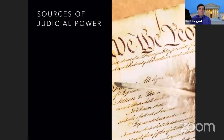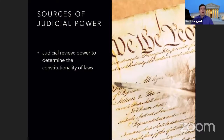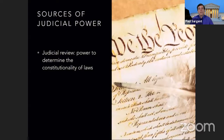The power of the judicial branch comes from a few places. Their main power is judicial review — the courts have the power to determine whether laws are constitutional or not. If a law violates the Constitution, the courts have the ability to strike down the law or part of a law, saying it violates the Constitution and therefore cannot exist anymore. They've done that many, many times.